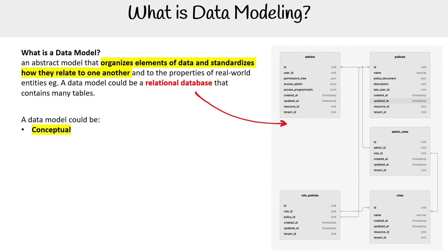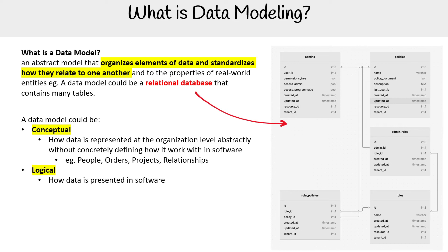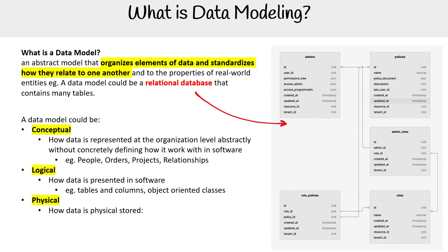So a data model could be conceptual — how data is represented at the organizational level abstractly, without concretely describing how it works within the software. So people, orders, projects, relationships. Logical — how data is presented in software: tables, columns, object-oriented classes. Physical — how data is physically stored: partitions, CPUs, and table spaces.